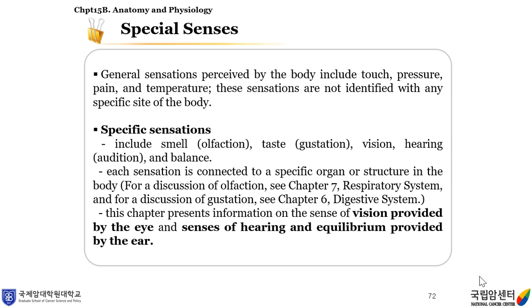Special senses are general sensations perceived by the body and include touch, pressure, pain, and temperature. These sensations are not identified with any specific site of the body. Specific sensations include smell, also called olfaction; taste, gustation; vision; hearing, audition; and balance, which are connected to specific organs or structures in the body. This chapter presents information on the sense of vision provided by the eye and senses of hearing and equilibrium provided by the ear.